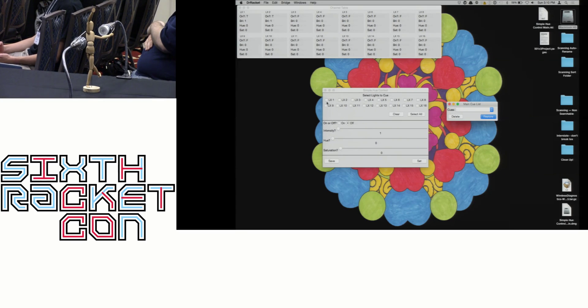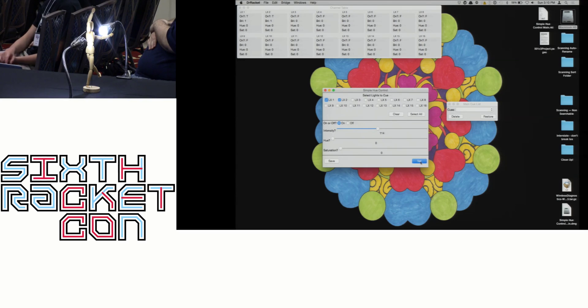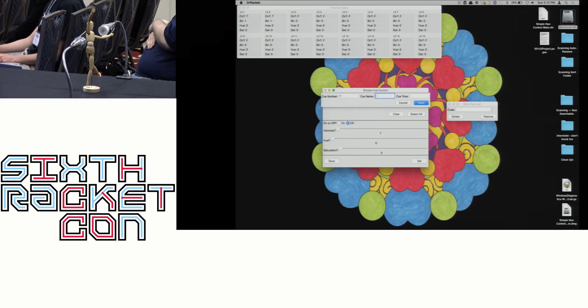And now, we can select those lights and turn them on. We can make them brighter. We can change the color. And then we can make that color really saturated. So, we're going to start off with a blackout for Mr. Stickman. We're going to set that. And then we're going to save that as Q1, Q Name blackout, and Q times zero since it's just the start of the show.